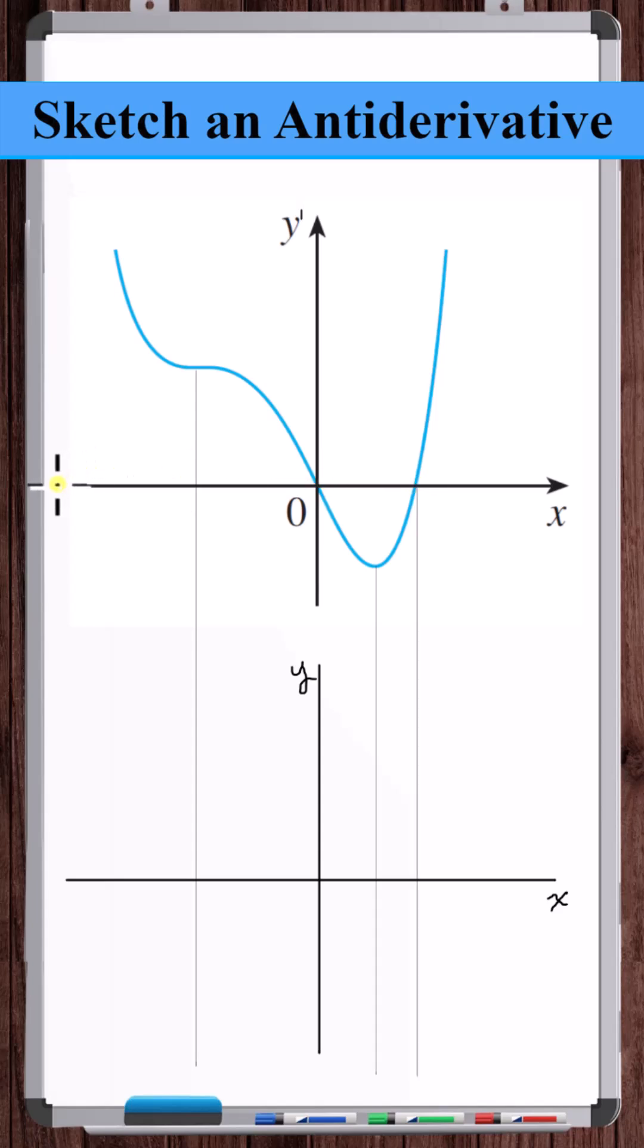As x approaches negative infinity, the slope of the antiderivative is approaching positive infinity. The slope is getting smaller and smaller, and at this point, it's approaching a positive constant value. So the antiderivative will be kind of like a line right around this point.